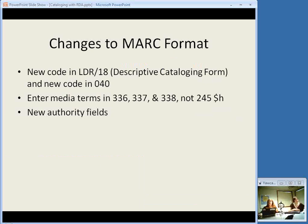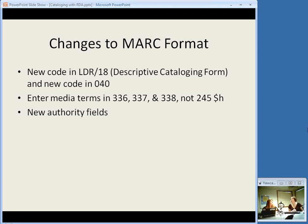That was wrapping up the basic differences from AACR2. I'll continue by talking about some changes to MARC format — there are some new fields and new codes. These were included in MARC updates 10 and 11, which came out recently, and are available at the Library of Congress MARC documentation site. The changes are all marked in red, so they're really obvious as new things. There's a new code to be used in the leader under descriptive cataloging form, a corresponding new code in the 040 field, and new fields for media type, content type, carrier type, and also some new authority fields.